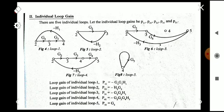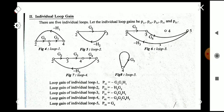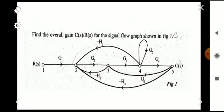Next we find the individual loop gains. First we identify what loops exist. There are five loops in total. The loops include: g2·g3 with −h1, g2 with −h2, g2·g6 with −h3, g2·g3·g4 with −h3, and g5 alone. Care is needed when finding the loops — you must not miss any loop. One such loop that may not be noticed is g2·g6·(−h3).